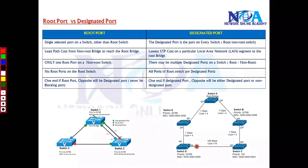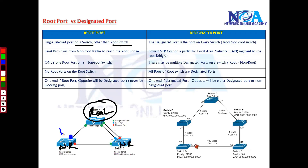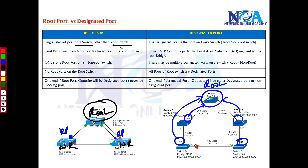The root port is present on every non-root bridge. So if this is my root bridge, the remaining are non-root bridges — every non-root bridge will have one root port. Every non-root bridge will have one port which is the shortest path to the root bridge, so it will have only one root port, not more than that.